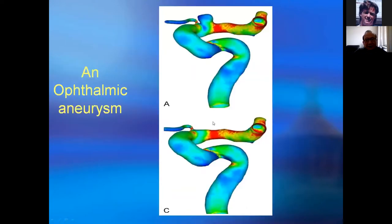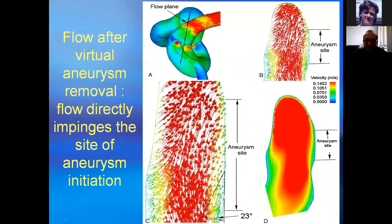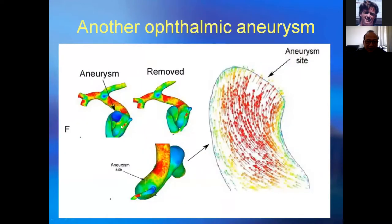This is another case of the ophthalmic segment of the internal carotid artery — the aneurysm was virtually removed. After removal, we can see blood flow directly impacted at the aneurysm site. Another case also in the ophthalmic segment: we virtually removed the aneurysm and confirmed blood flow directly impacted at the aneurysm site. This figure demonstrates that the aneurysm was initiated by direct flow impediment.